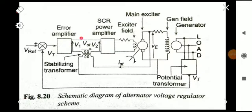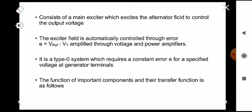An error is developed from that comparison, and the error is amplified using an error amplifier. Further, an SCR power amplifier is also used to enhance the power output. The main exciter controls the generator field, thereby controlling the voltage output. The entire system is a Type 0 system, which requires a constant error for a specified voltage at the generator terminals.